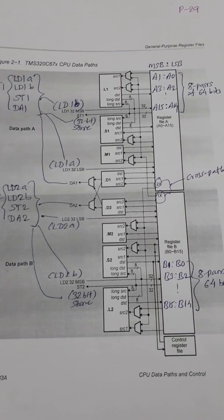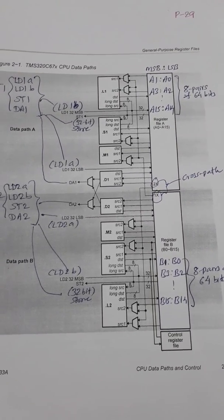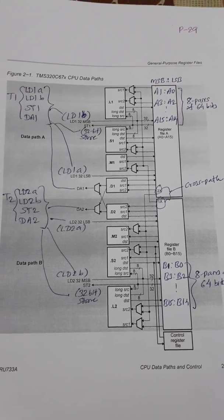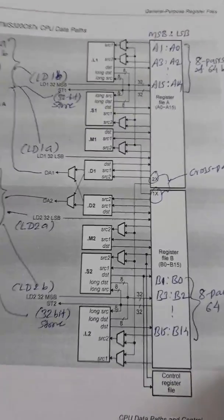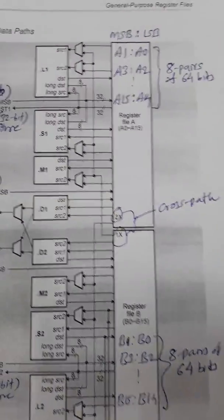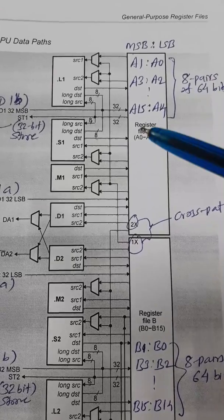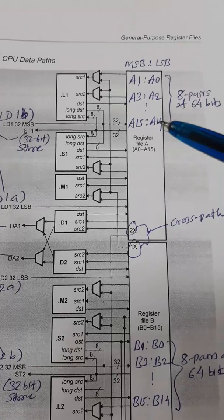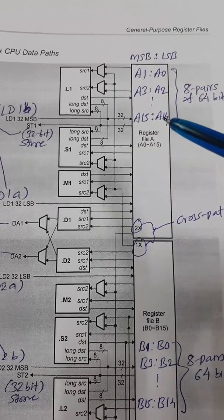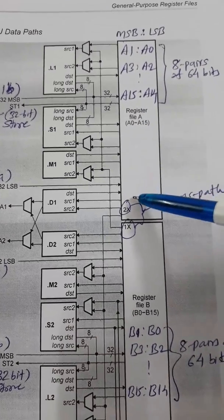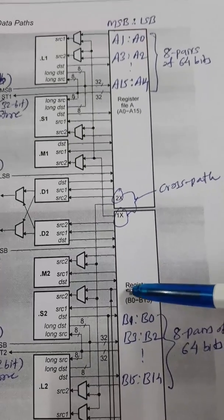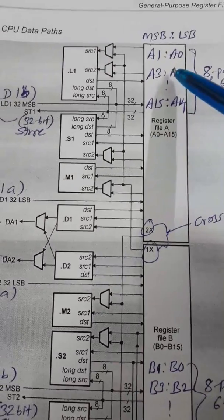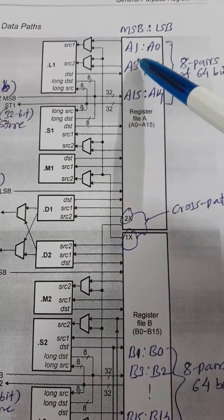Today we will see data paths for TMS 320 C67. In the previous video we have seen the basic block diagram of this particular chip. Now we come to the register files that are inside the CPU and try to see what is there in the register file. This register file consists of 16 registers in A path and in B path.